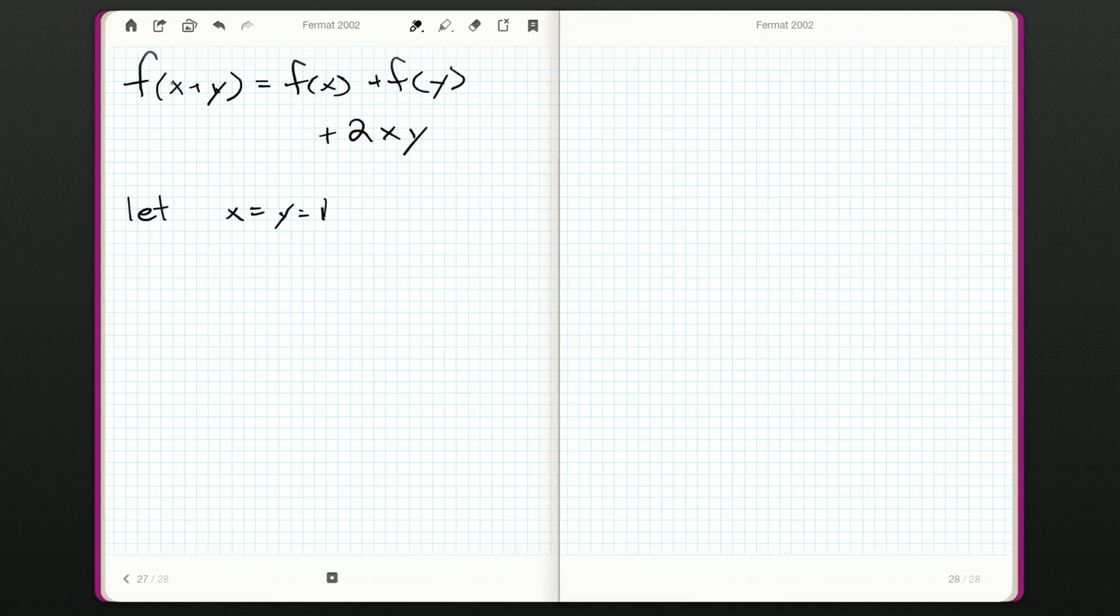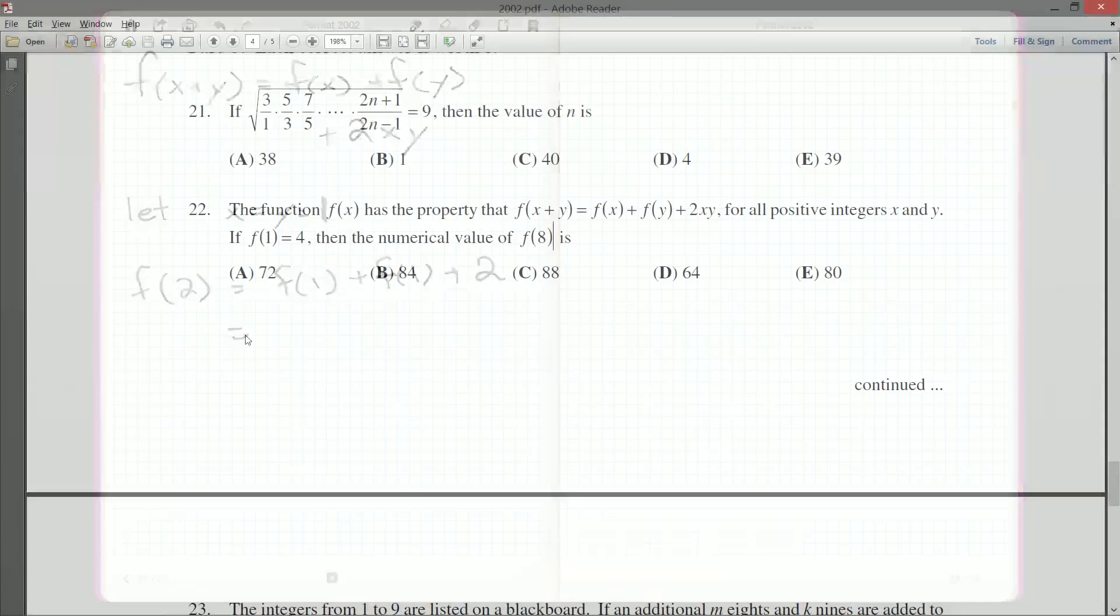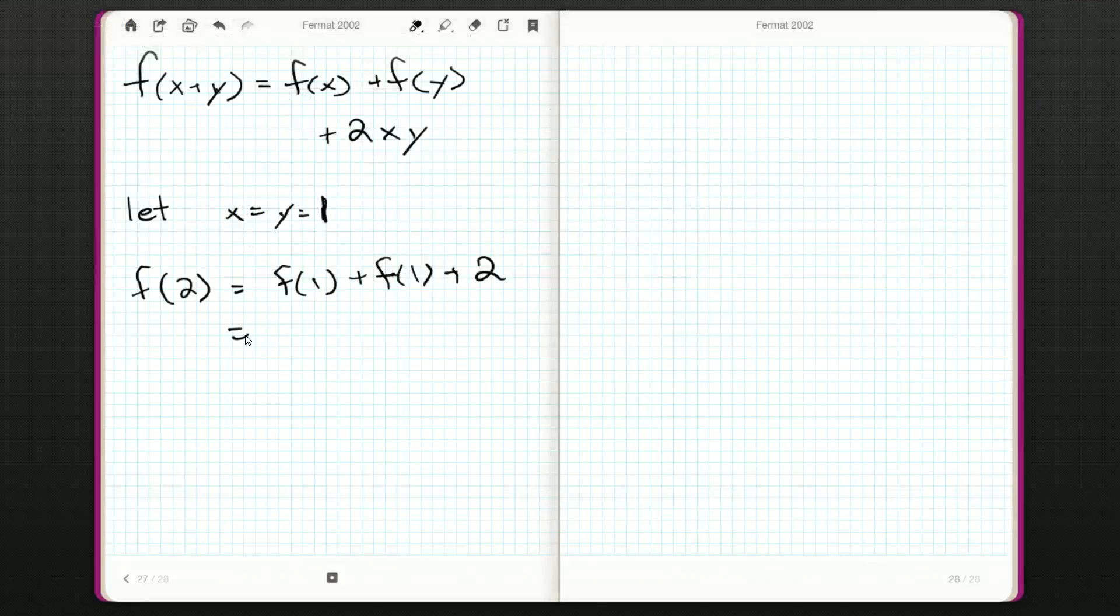If we want to get a new value for our function, we have to use previously known values f of x and f of y. But we only start off knowing one value, so the first step has got to be let x and y be 1. So that's going to be f of 1 plus 1, which is 2, is f of 1 plus f of 1 plus 2 times 1 times 1, which is just 2. And f of 1, I think they just told us that was 4, right? Yes, 4. So that's going to be 4 plus 4 plus 2, and that's going to give us 10. So now we know f of 2 is 10. Amazing.